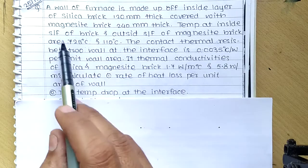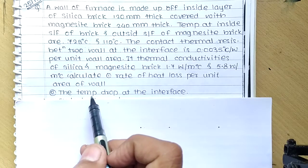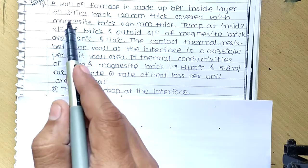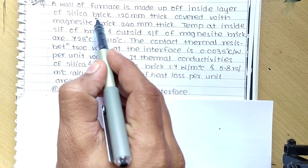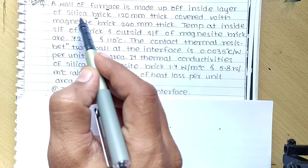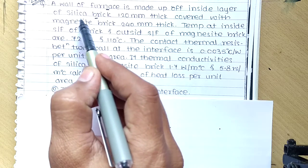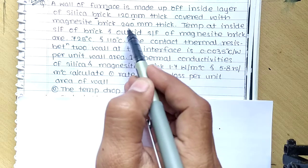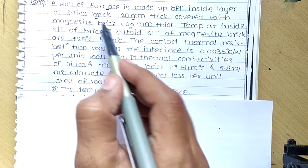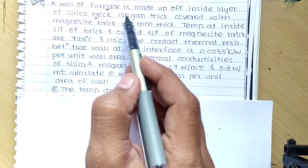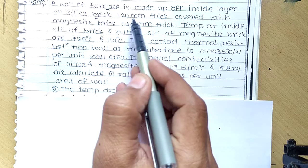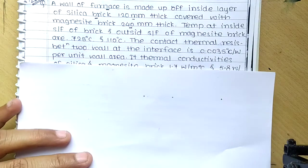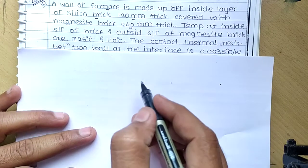Now this is the problem on thermal contact resistance. Let's read it: a wall of a furnace is made up of an inside layer of silica brick which is 120 mm thick, covered with magnesite brick of 240 mm. So there is a silica brick and then a magnesite brick, with dimensions 120 mm and 240 mm respectively.